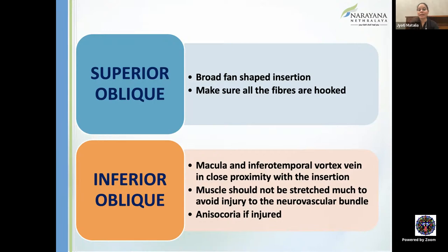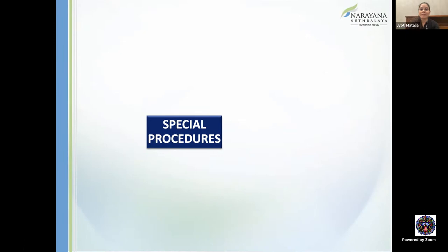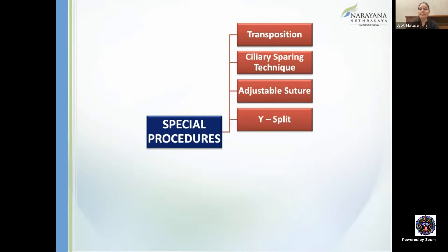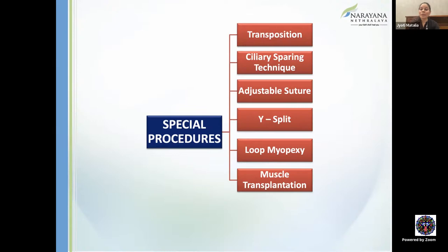The special procedures to be discussed are: transposition, ciliary sparing technique, adjustable suturing, Y-split, and surgeries related to DRS — loop myopexy, muscle transplantation, and nystagmus management combined with squint. Let's start with transposition.